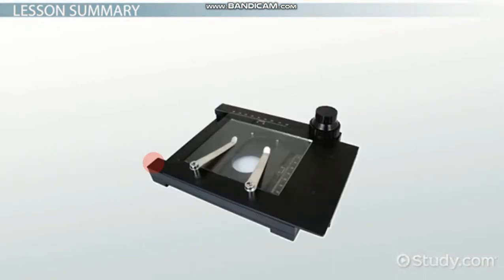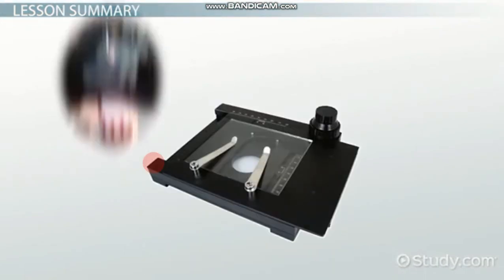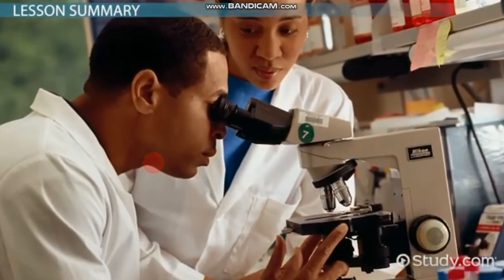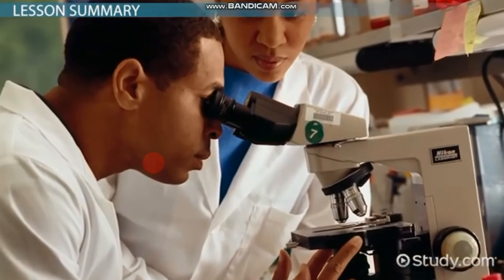The basic parts of a microscope include a stage to hold the sample, a light source and a way to focus the light, and a series of lenses. The best part about microscopes is that just about anyone can learn how to use one.